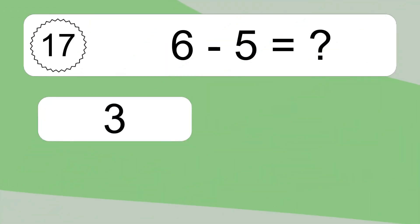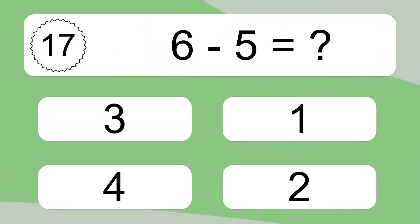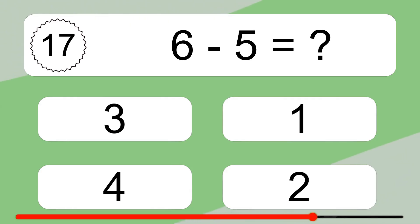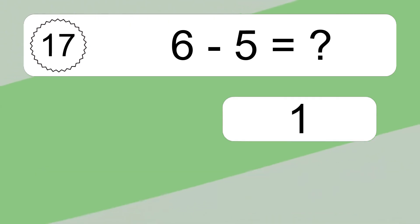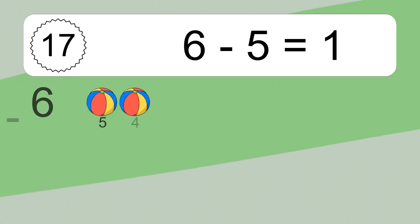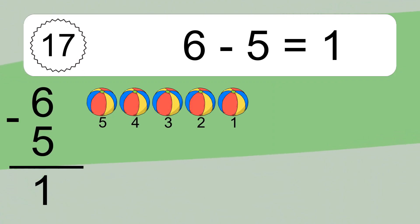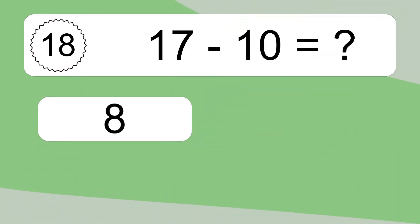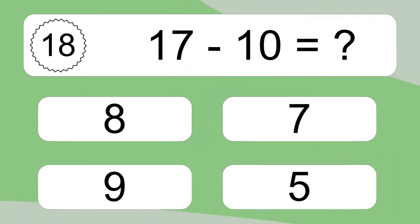6 minus 5 equals what? 6 minus 5 equals 1. Let's count it. 5, 4, 3, 2, 1.